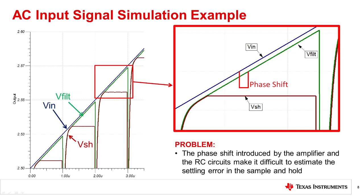This slide zooms in on the AC simulation results. You can see that the sample and hold signal tracks the filter signal well during acquisition and holds at the end of the acquisition. Notice how the input signal does not track the filter signal. There is a phase shift from the filter and also from the internal sampling network. Because of the phase shift, we cannot simply compare the input signal to the sample and hold voltage to calculate an error.